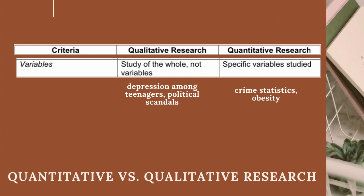Variables: Qualitative research studies the whole and not specific variables. For example, depression among teenagers and political scandals. Quantitative research studies specific variables. For example, crime statistics and obesity.